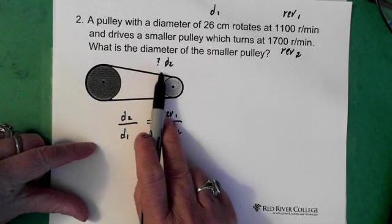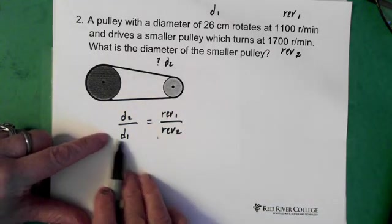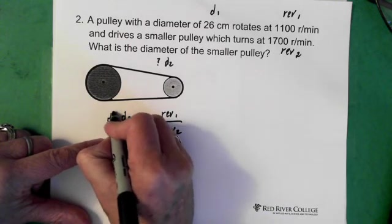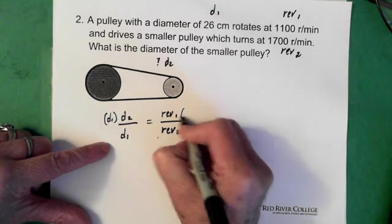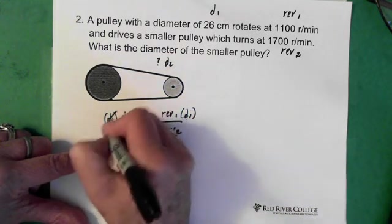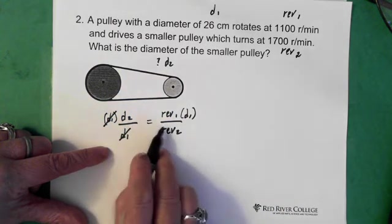Now this is what we're looking for. So what I'm going to do is multiply both sides by diameter 1. So multiply here by diameter 1. Multiply here by diameter 1. These two cancel. And we have diameter 2 equals.